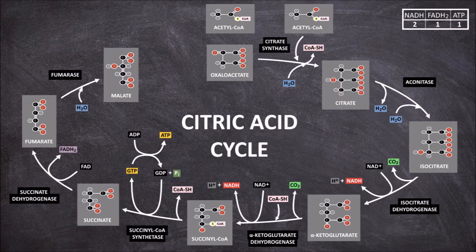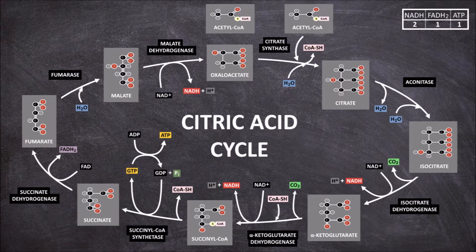The eighth and final step involves the oxidation of malate into oxaloacetate using the enzyme malate dehydrogenase. This step reduces NAD+ into NADH, producing one NADH and taking our net total for one acetyl-CoA molecule to three NADH, one FADH2, and one ATP.